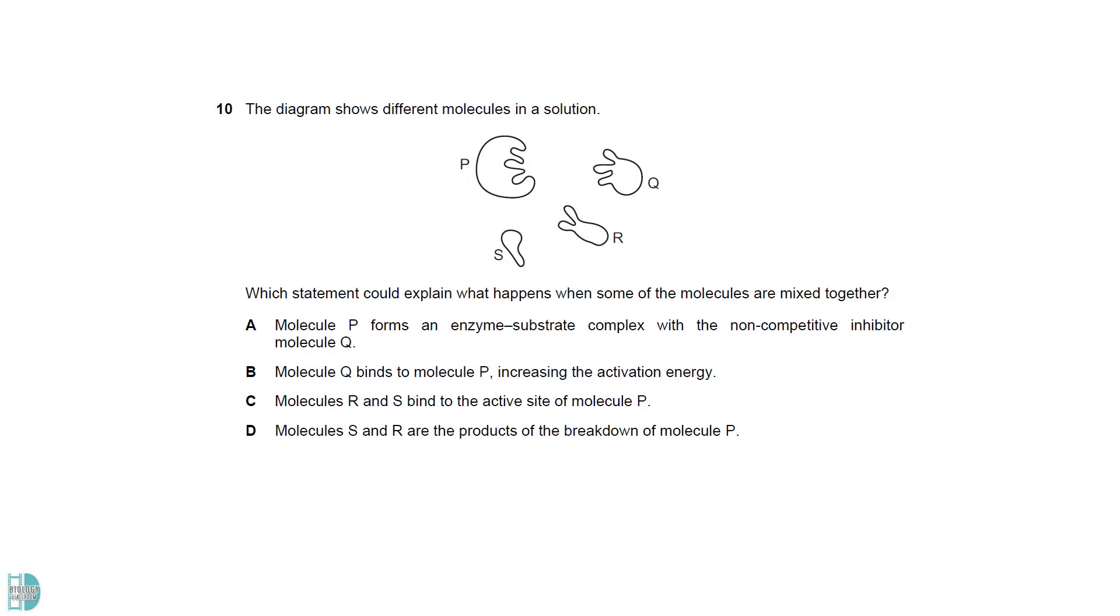A is wrong because, if Q is an inhibitor, they wouldn't form an ES complex. Moreover, they have complementary shapes. Therefore, if Q is an inhibitor, it acts as a competitive inhibitor. B is incorrect because, if P is the enzyme and Q is the substrate, the activation energy should decrease.